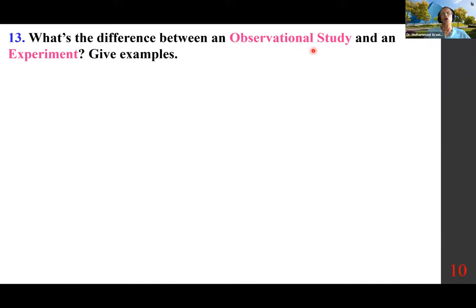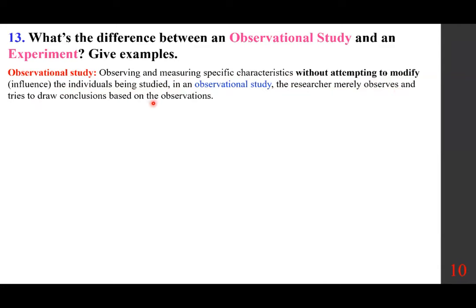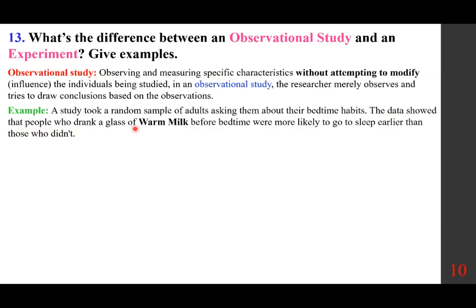What is the difference between an observational study and an experiment? An observational study involves observing and measuring specific characteristics without attempting to modify or influence the individuals being studied — the researcher merely observes and tries to draw conclusions. Example: a study took a random sample of adults asking about their bedtime habits, and the data showed that people who drank a glass of warm milk before bedtime were more likely to go to sleep earlier than those who didn't.